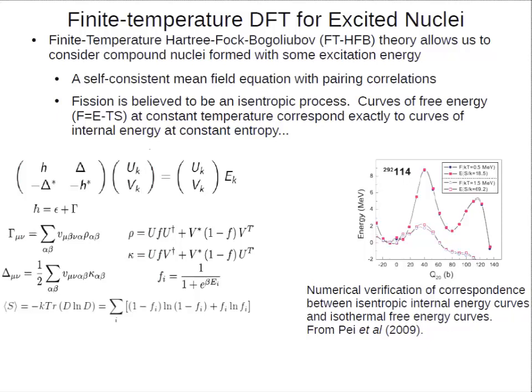I present, just for reference, the Hartree-Fock-Bogoliubov equation, which is solved to get the energy eigenstates as well as some sense of the wave function of the nucleus. That's the zero-temperature Hartree-Fock-Bogoliubov equation. The only difference when introducing temperature is in the nuclear density and the pairing density, which then depend on temperature through a Fermi-Dirac distribution. For the finite temperature formalism, we technically calculate free energy as a function of constant temperature, but fission is not an isothermal process — there's no heat bath keeping the nucleus at a fixed temperature. We believe it is an isentropic process, that entropy is kept constant throughout.